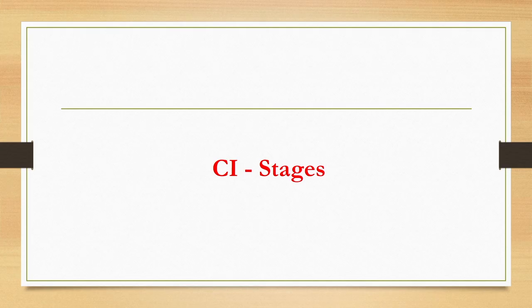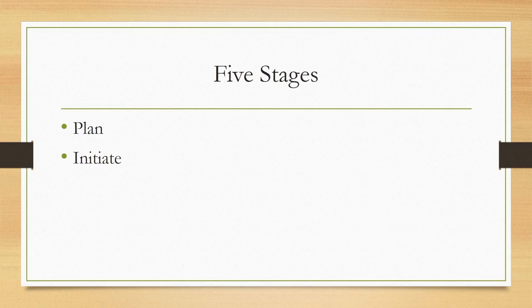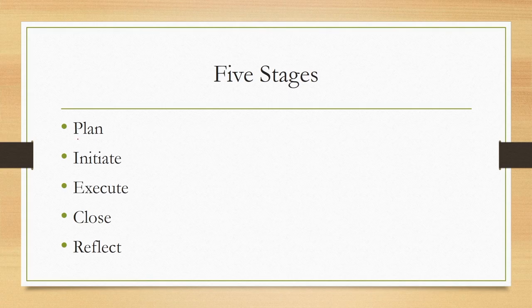Now let us learn about the different stages. Contextual inquiry can be thought of as consisting of multiple stages of activities. There are broadly five stages: the first stage is Plan, the second is Initiate, then Execute, then Close, and finally Reflect.